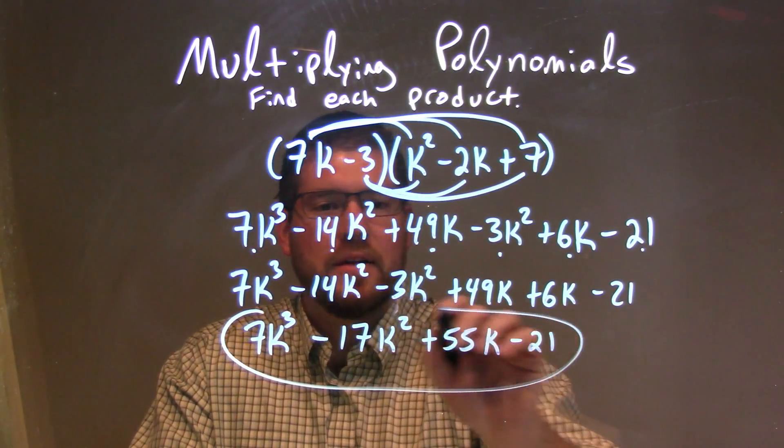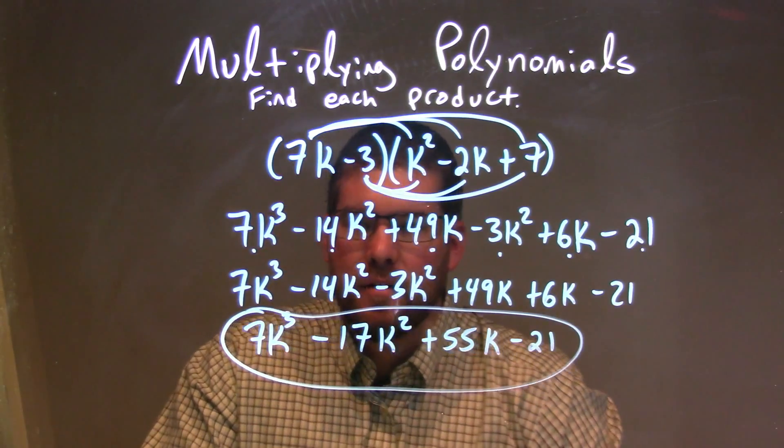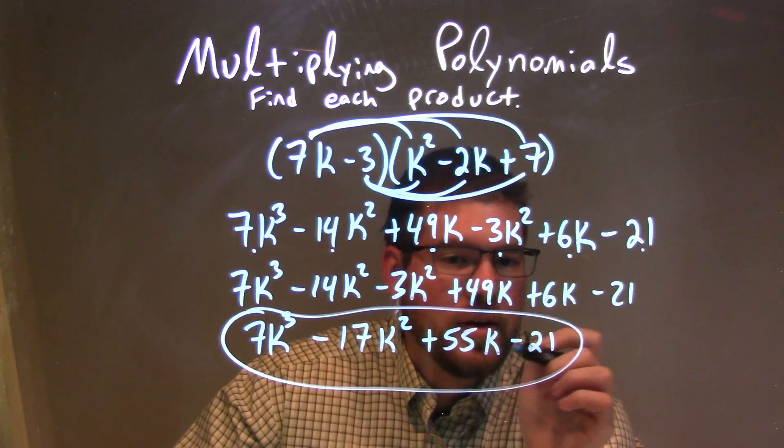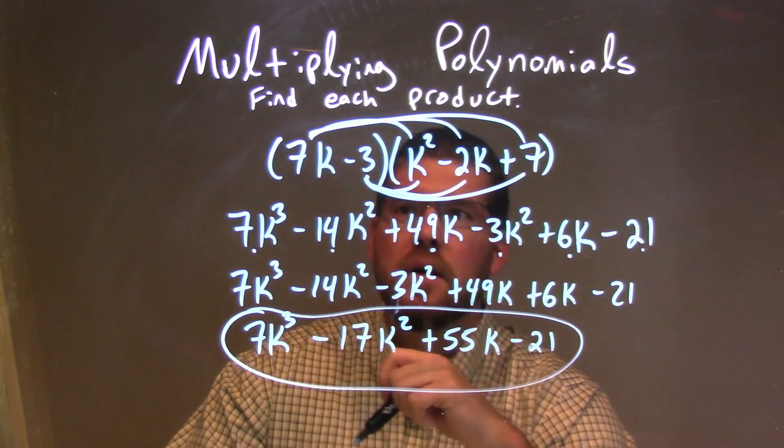And there we have it. Our final answer is 7k to the third power minus 17k squared plus 55k minus 21.